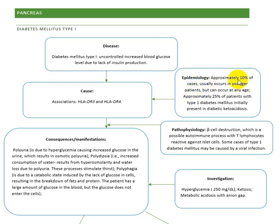Approximately 10% of cases occur in young patients, while 90% occur in older patients. Birth can occur at any age; approximately 5% of patients initially present with diabetic ketoacidosis.